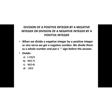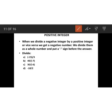Now, division of a positive integer by a negative integer, or a negative integer by a positive integer, gives a negative number. We divide them as whole numbers and then put a negative sign before the answer. For example, minus 15 divided by 3: divide 15 by 3 to get 5, then put the negative sign, giving minus 5.